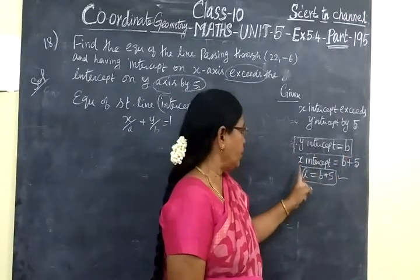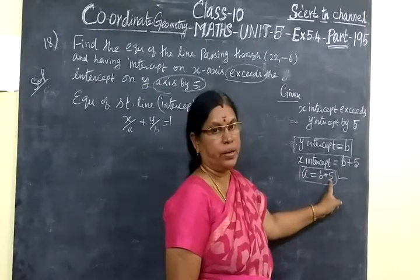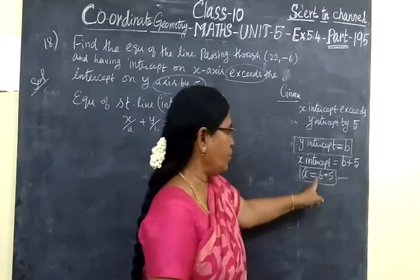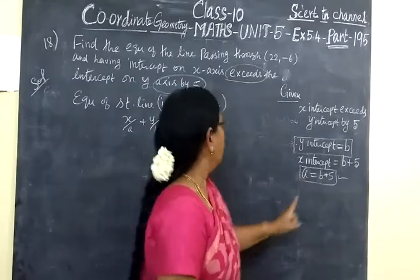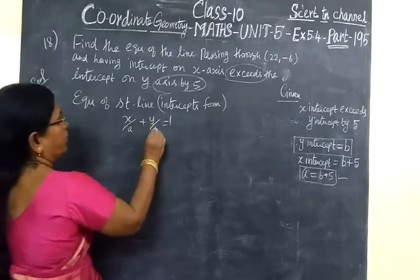We know that if the Y-intercept exceeds the X-intercept by 5, then the intercept on X-axis is B plus 5, or we can say the X-intercept is B minus 5. The equation of a straight line is x/a plus y/b equals 1.